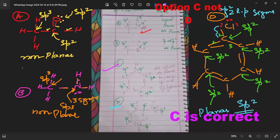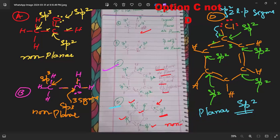In option D, every carbon atom is sp2 hybridized. Unfortunately, in the other option there is an sp3 carbon, making it non-planar. To summarize: all atoms are planar when every atom is sp2 or sp hybridized. That covers the hybridization analysis.